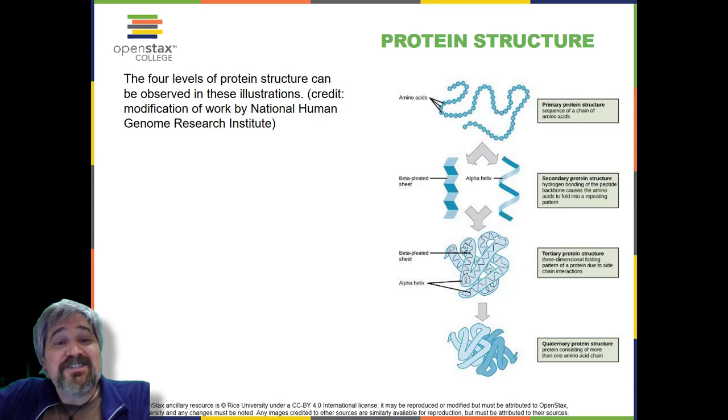The alpha helix and beta pleated sheet structures are found in many globular and fibrous proteins. The unique three-dimensional structure of a polypeptide is known as its tertiary structure. This structure is caused by chemical interactions between various amino acids and regions of the polypeptide. Primarily, the interactions among R groups create the complex three-dimensional tertiary structure of a protein. There may be ionic bonds formed between R groups on different amino acids or hydrogen bonding beyond that involved in the secondary structure. When protein folding takes place, the hydrophobic R groups of nonpolar amino acids lay in the interior of the protein, whereas the hydrophilic R groups lay on the outside. The former types of interactions are also known as hydrophobic interactions.